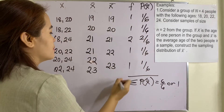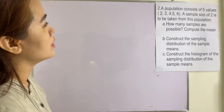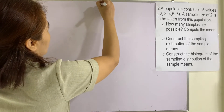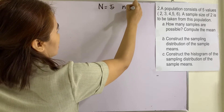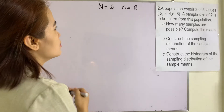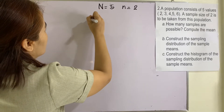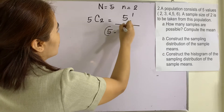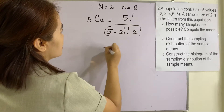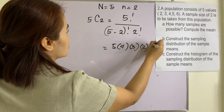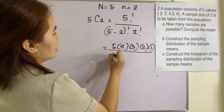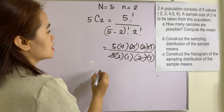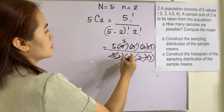Example 2: A population consists of 5 values: 2, 3, 4, 5, 6. A sample of size n equals 2 is taken from this population. Our big N is 5 and small n is 2. How many samples are possible? Using the formula: 5 factorial over (5 minus 2) factorial times 2 factorial. After cancelling, we get 10 possible samples.